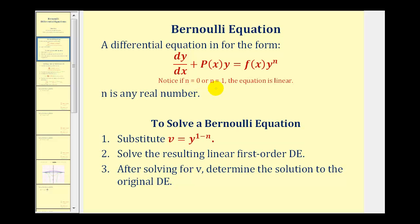To solve our Bernoulli differential equation, we're going to perform a substitution using the formula v equals y raised to the power of n minus 1. After performing the substitution, the result will be a linear first-order differential equation, which we'll solve by using an integrating factor. Then we'll solve for v, then determine the solution to the original differential equation.